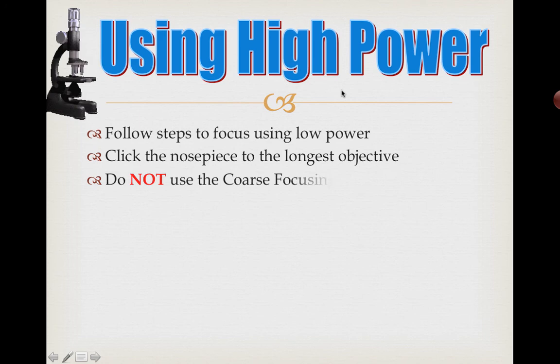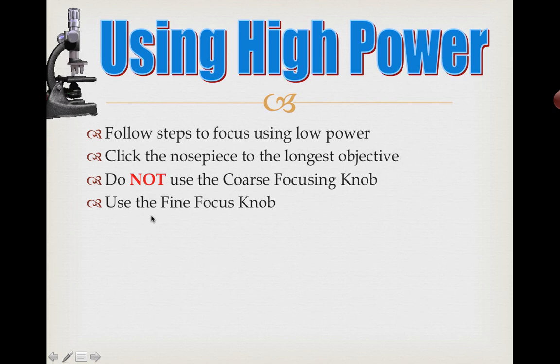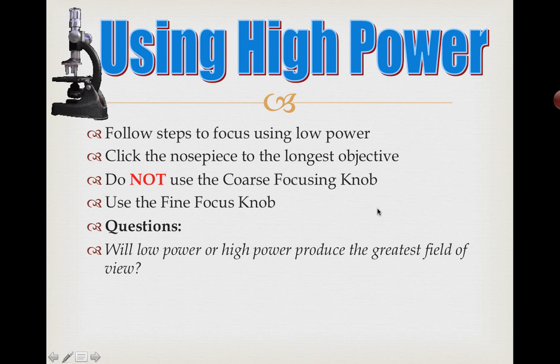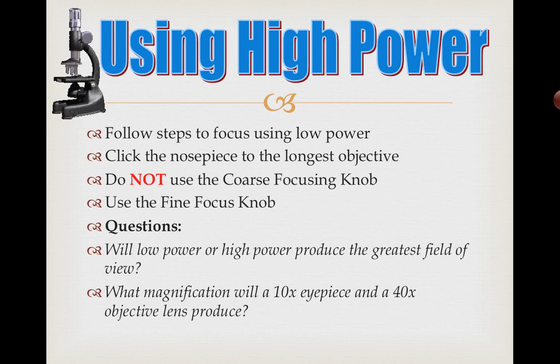Once everything is in place and you can see what you want, you can switch the nose piece to the next magnification and just make a few fine adjustments. At the longest objective, do not use the coarse focusing knob — use the fine focus knob. The tip is: focus at low power first, then revolve the nose piece to the next lens and adjust the fine focus knob. A couple of questions: will low power or high power magnification produce the greatest field of view? And what magnification will a 10x eyepiece and a 40x objective lens produce? Make sure you know how to use a microscope, and make sure you understand that life can only come from other life.